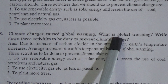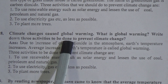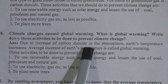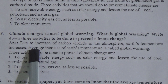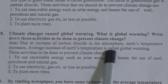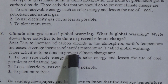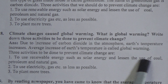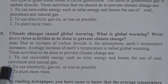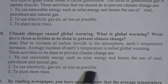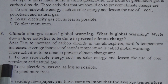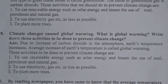Climate change causes global warming. What is global warming? Write down three activities to be done to prevent climate change. The answer is: due to an increase of carbon dioxide in the atmosphere, Earth's temperature increases. The average increase of Earth's temperature is called global warming. Three activities to prevent climate change are: use renewable energy such as solar energy and lessen use of coal, petroleum and natural gas; use electricity and gas as little as possible; and plant more trees.